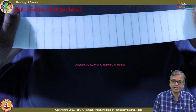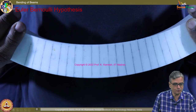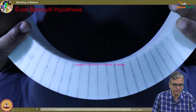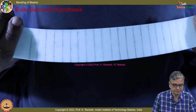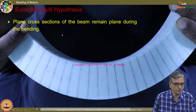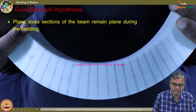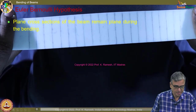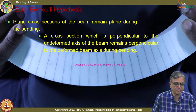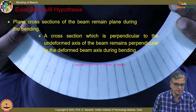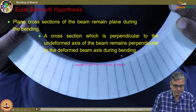Then we moved on to bending of beams. We looked at a very soft beam and could understand that straight lines get rotated. Cross sections of the beam remain plane during bending — there is no warping. And the cross section perpendicular to the undeformed axis of the beam remains perpendicular to the deformed beam during bending — that is very important.